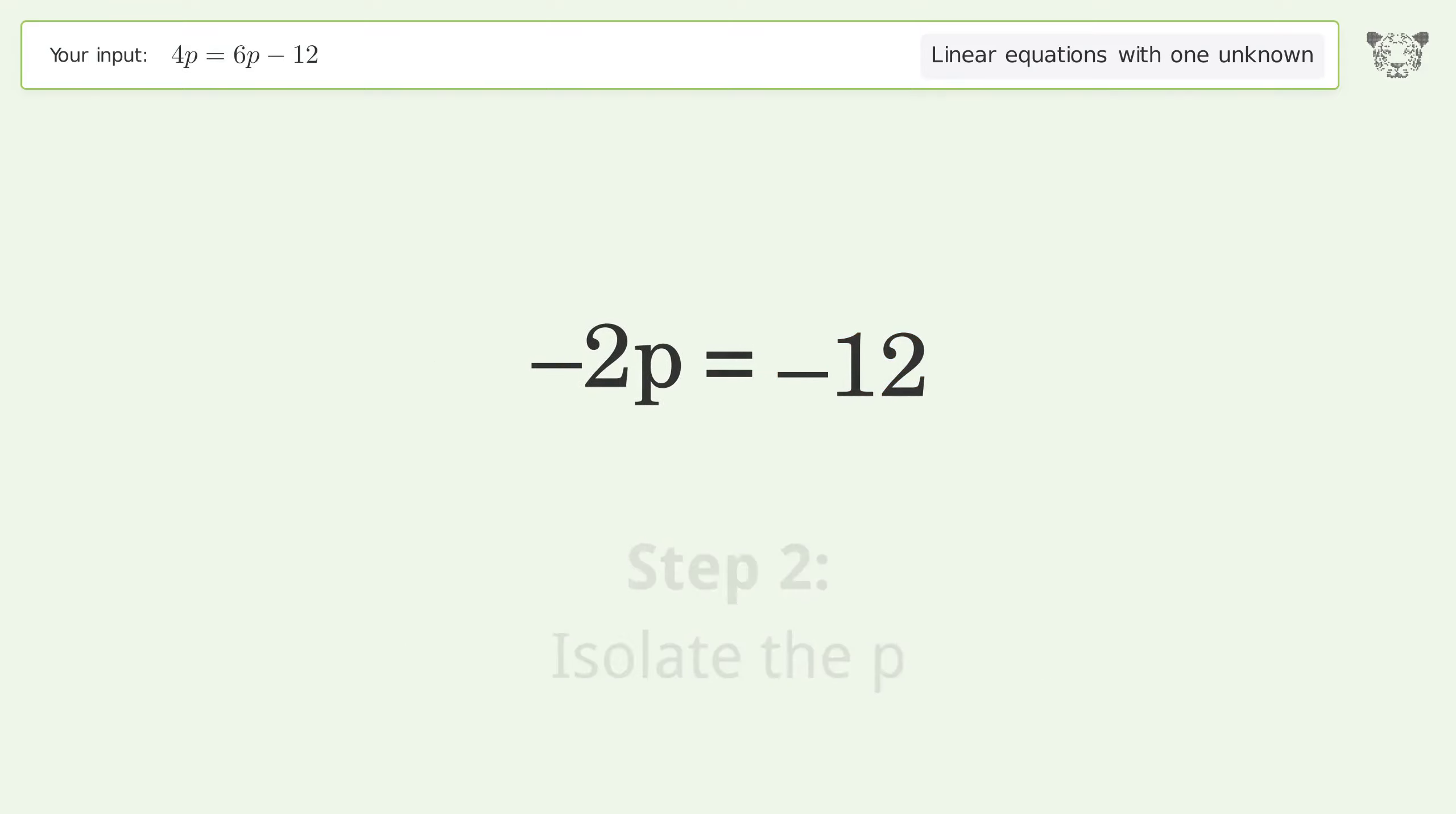Isolate the p by dividing both sides by negative 2. Cancel out the negatives.